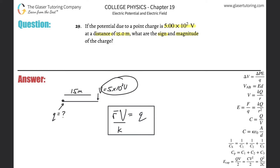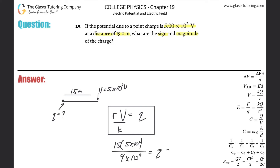Now plug in all the appropriate values with their signs. If voltage were negative, you'd plug it in as negative, but it's positive here. So: Q = (r × V) / k = (15 × 5×10²) / (9×10⁹). Plugging into the calculator: 15 times 5×10² divided by 9×10⁹.